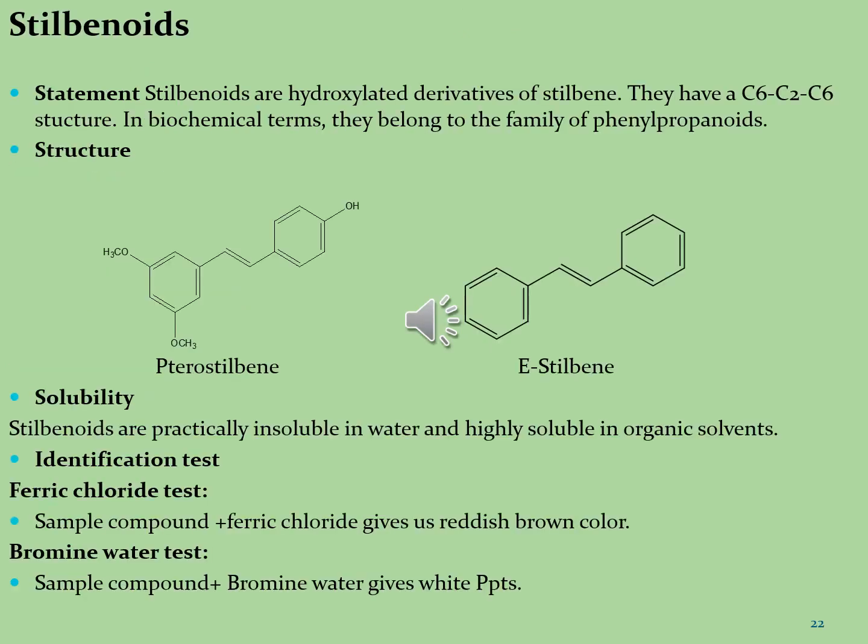Let's see what are stilbenoids. Stilbenoids are a family of polyphenols known for the complexity of their structures and diverse biological activities, occurring with limited but heterogeneous distribution in the plant kingdom. The most prominent stilbene-containing plant family is Vitaceae, represented by the wine-producing grape Vitis vinifera, one of the richest sources of novel stilbenes, along with Gentianaceae and Fabaceae. Stilbenoids are hydroxylated derivatives of stilbene with C6-C2-C6 structures, belonging to the phenylpropanoid family. Key phytoconstituents are pterostilbene and E-stilbene.